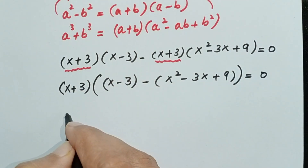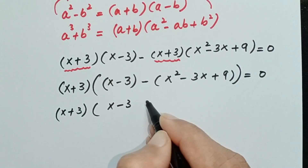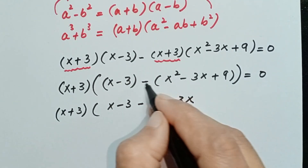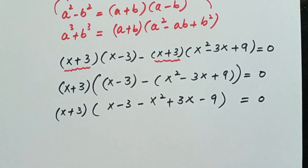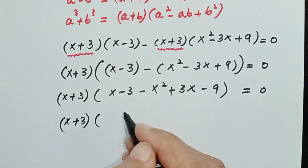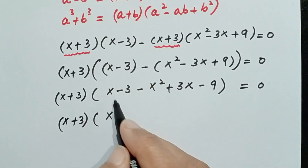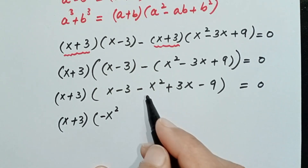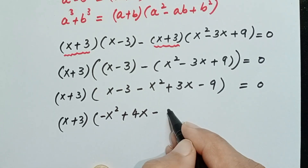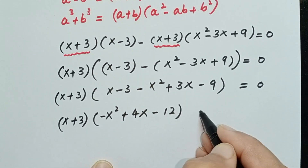We simplify inside the bracket by expanding: (x − 3) minus x squared plus 3x minus 9. Collecting like terms: x squared cancels, and 3x plus x gives 4x, and minus 3 minus 9 gives minus 12. So we have (x + 3)(−x squared + 4x − 12) equals 0.